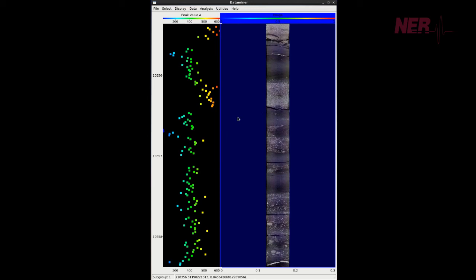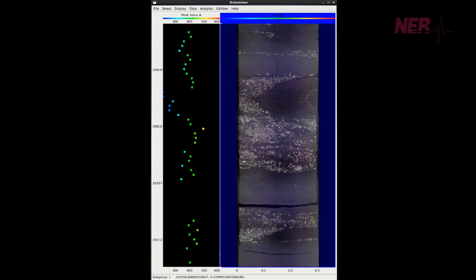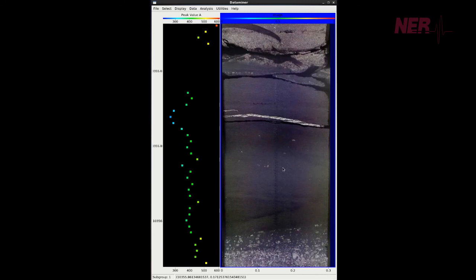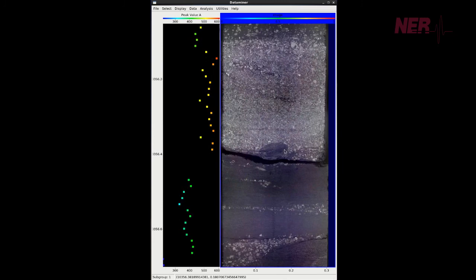At the conclusion of the test, the data can be loaded into DataMiner, a software platform for visualization and manipulation of AutoScan data. Here we load the impulse hammer data from the slab core and interactively view it alongside the core photography taken with the AutoScan system. This allows the user to rapidly associate the mechanical properties, as determined using the impulse hammer, with the geologic rock types in the core.